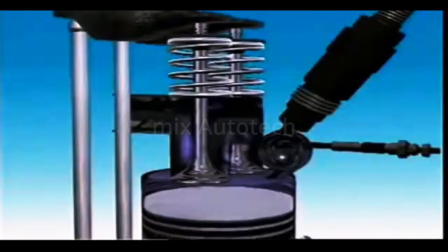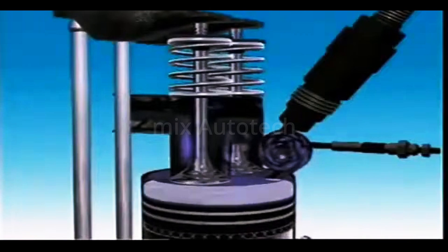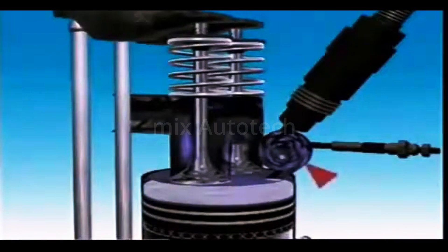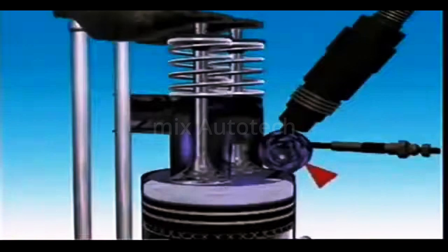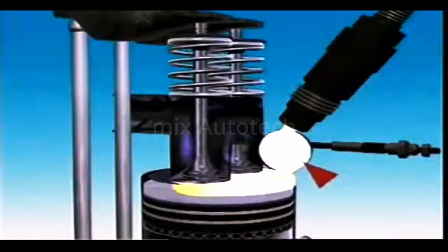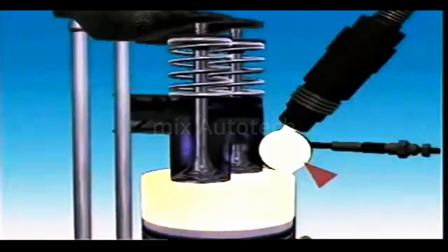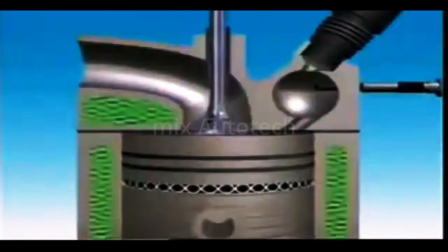The main combustion chamber is between the cylinder head and the top of the piston, but a smaller separate chamber is in the head. Fuel is injected into this smaller chamber. It can have various designs.